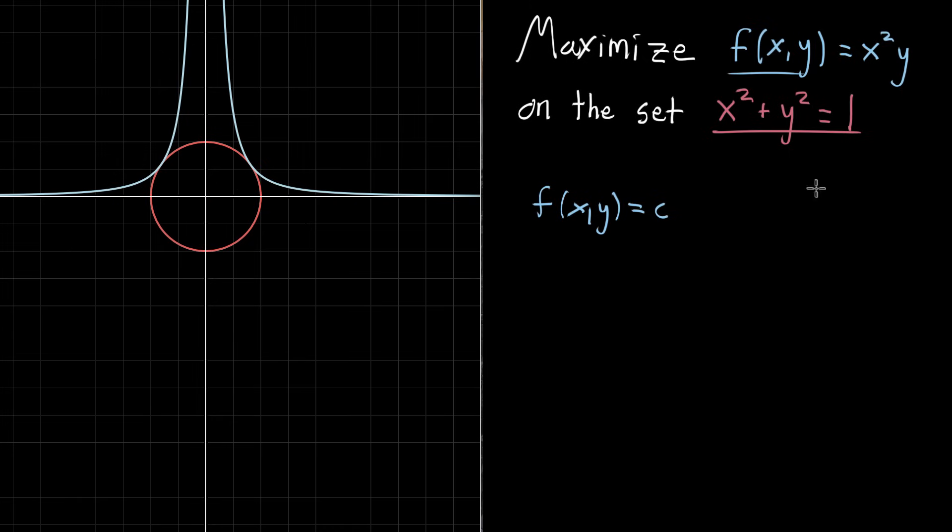So you might kind of draw this out in a little sketch and say there's some curve representing your constraint, which in this case would be kind of where our circle is. And then the curve representing the contour would just kiss that curve, just barely touch it in some way.